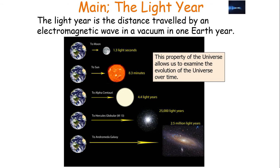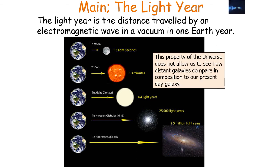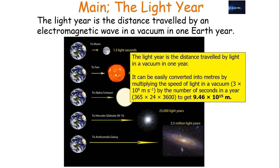This property of the universe allows us to examine the evolution of the universe over time. But the issue is, it doesn't allow us to see how distant galaxies compare in composition to our present-day galaxies — only what distant galaxies were like a very long time ago. The light year is the distance travelled by light, or any electromagnetic radiation, in a vacuum in one Earth year. It can be easily converted into metres by multiplying the speed of light in a vacuum, 3 times 10 to the 8 metres per second, by the number of seconds in a year, to get a value of 9.46 times 10 to the 15 metres.